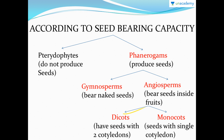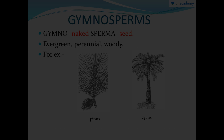Angiosperms are further divided into dicots and monocots. Dicots are the ones that have two cotyledons, and seeds with a single cotyledon are monocots. Now we will study each group.